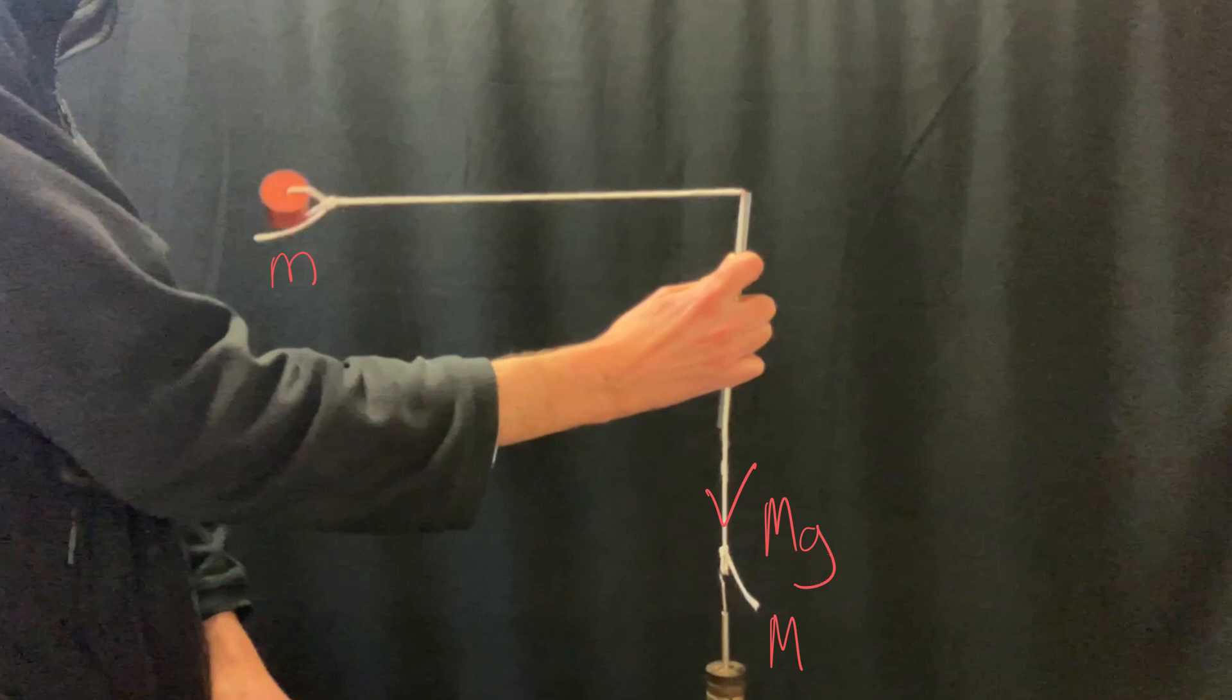The equation for centripetal force required for circular motion is that the centripetal force equals the mass doing the circular motion times the speed squared divided by the radius. Because the centripetal force is provided by big Mg, we can say that Mg equals m v squared over r.